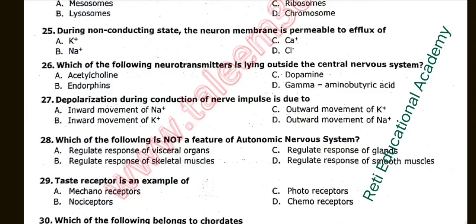Question number twenty-six: Which of the following neurotransmitters is lying outside the central nervous system? The correct answer is A: Acetylcholine. Question number twenty-seven: Depolarization during conduction of nerve impulse is due to. The correct option is A: Inward movement of Na+ ions. Question number twenty-eight: Which of the following is not a feature of the autonomic nervous system? The correct option is B: Regulates response of skeletal muscles.